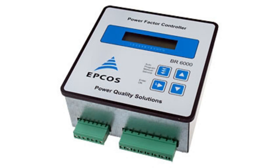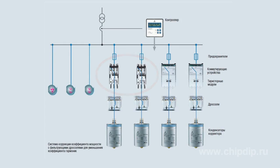Today's power factor correction controllers are based on microprocessors. A microprocessor analyzes the signal from the current transformer and transmits the signal to the capacitor bank control, connecting or disconnecting individual capacitors or entire banks. Intelligent management of correction capacitors helps provide the most efficient load of the capacitor banks, bringing to a minimum the number of switch operations, which facilitates a longer bank life.